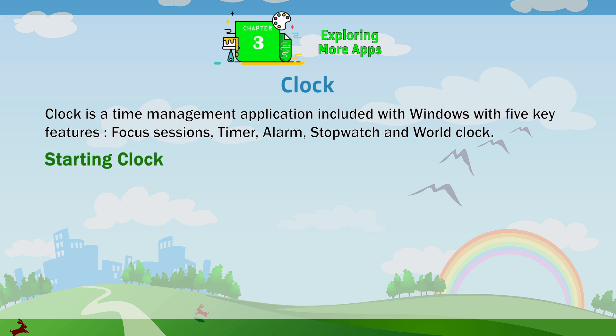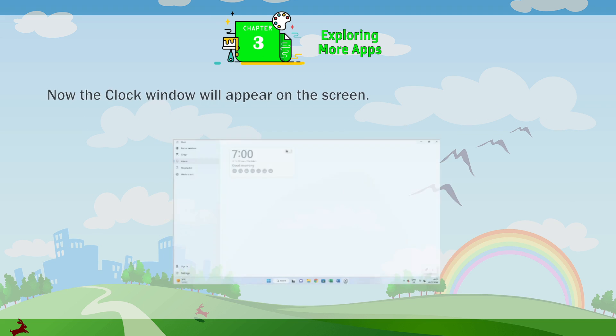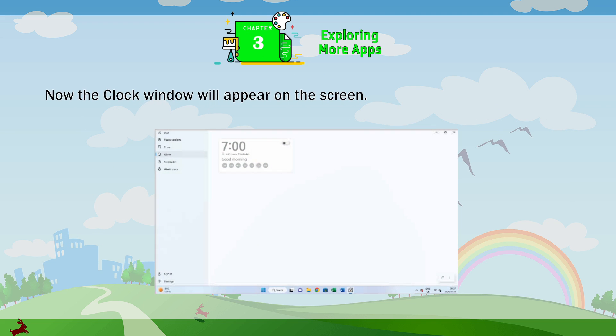Starting Clock. To start the Clock, follow these steps. Click on the Start button, then click on All Apps. Scroll down the Apps list and click on Clock. Now the Clock window will appear on the screen.